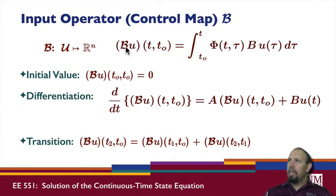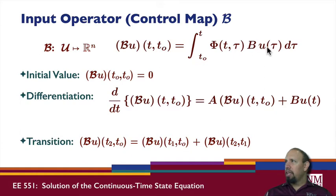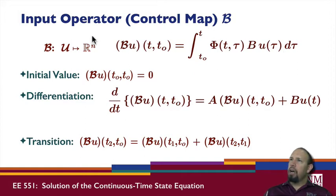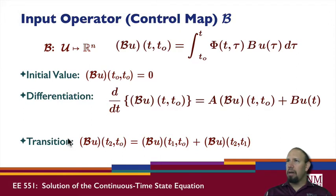This is the notation B operating on u from t₀ to t, and it's the integral from t₀ to t of the state transition matrix times B — this is actually a convolution integral. The input operator has some properties: for example, the initial value evaluated at t₀, t₀ gives zero, which is the same kind of thing we saw in discrete time.